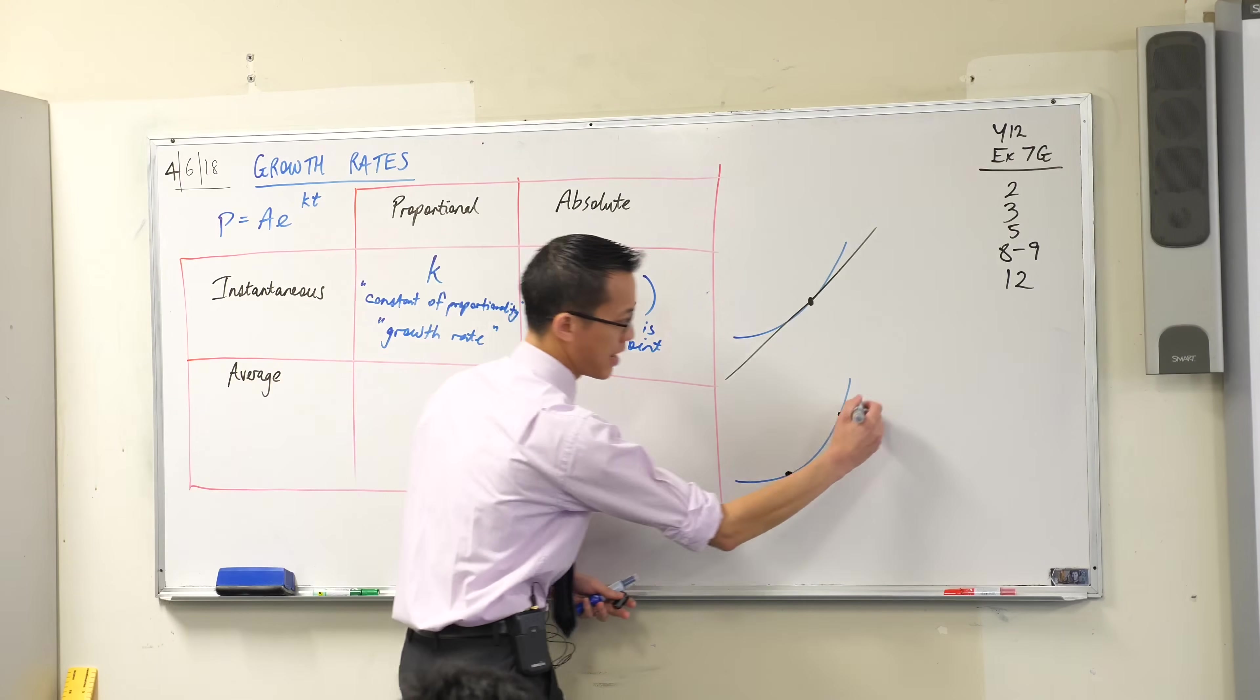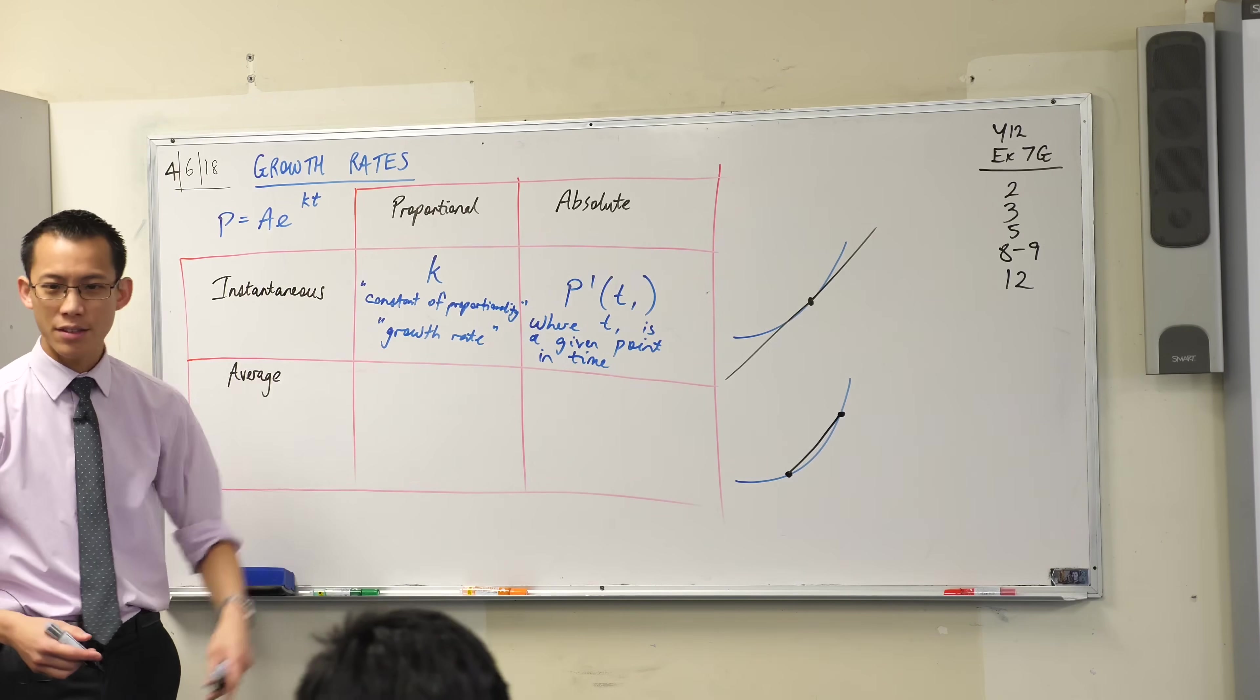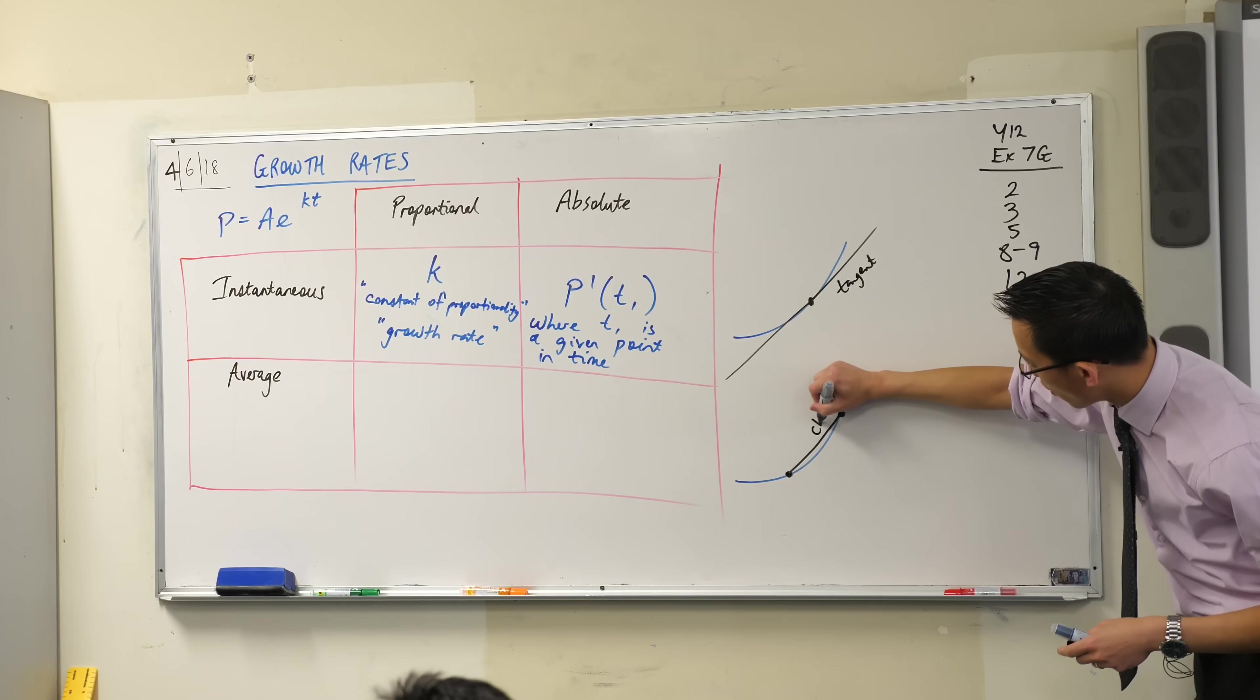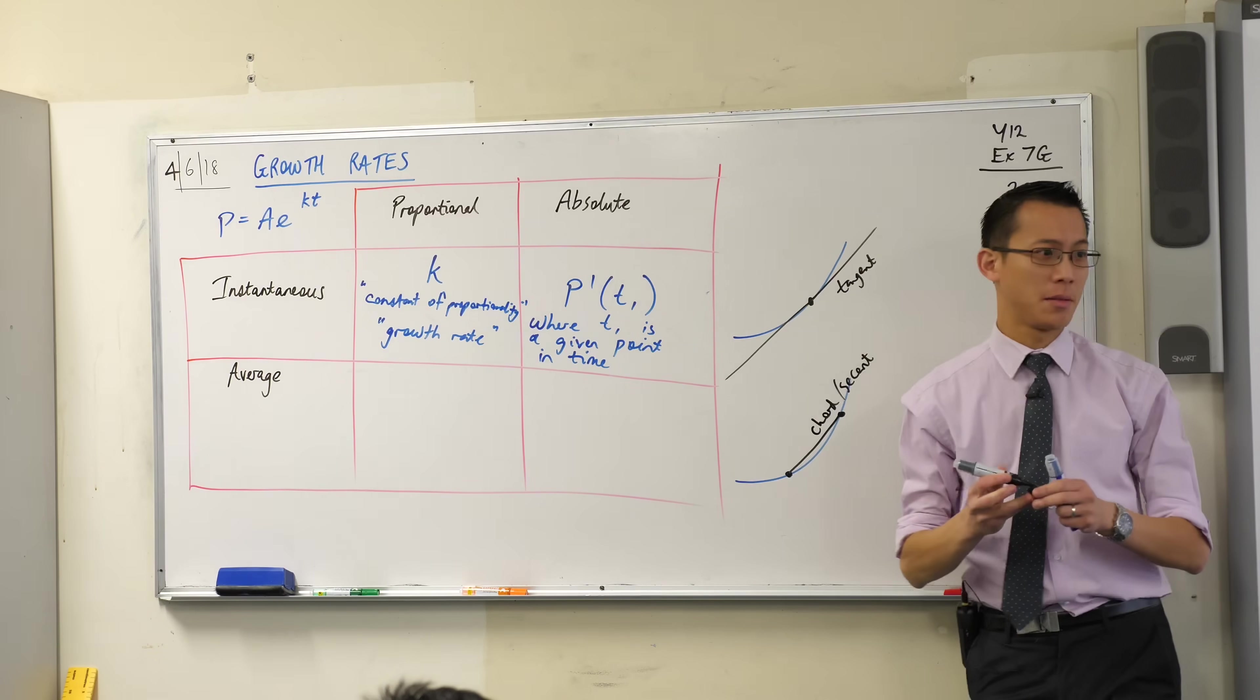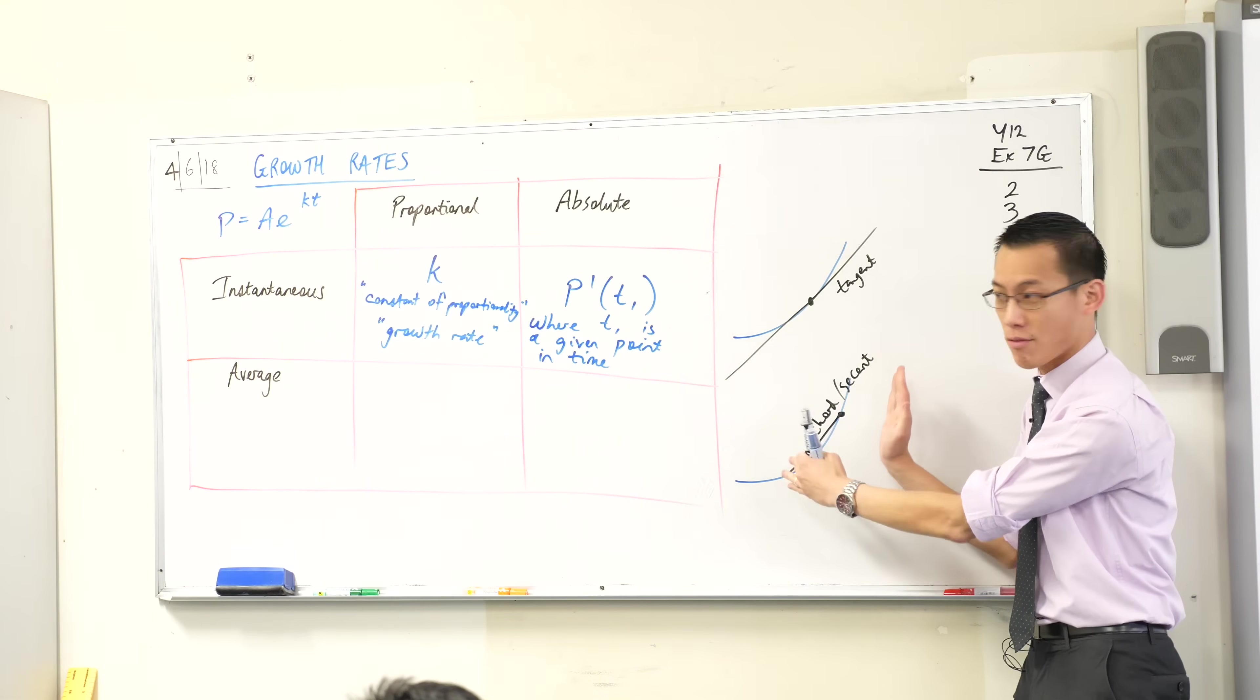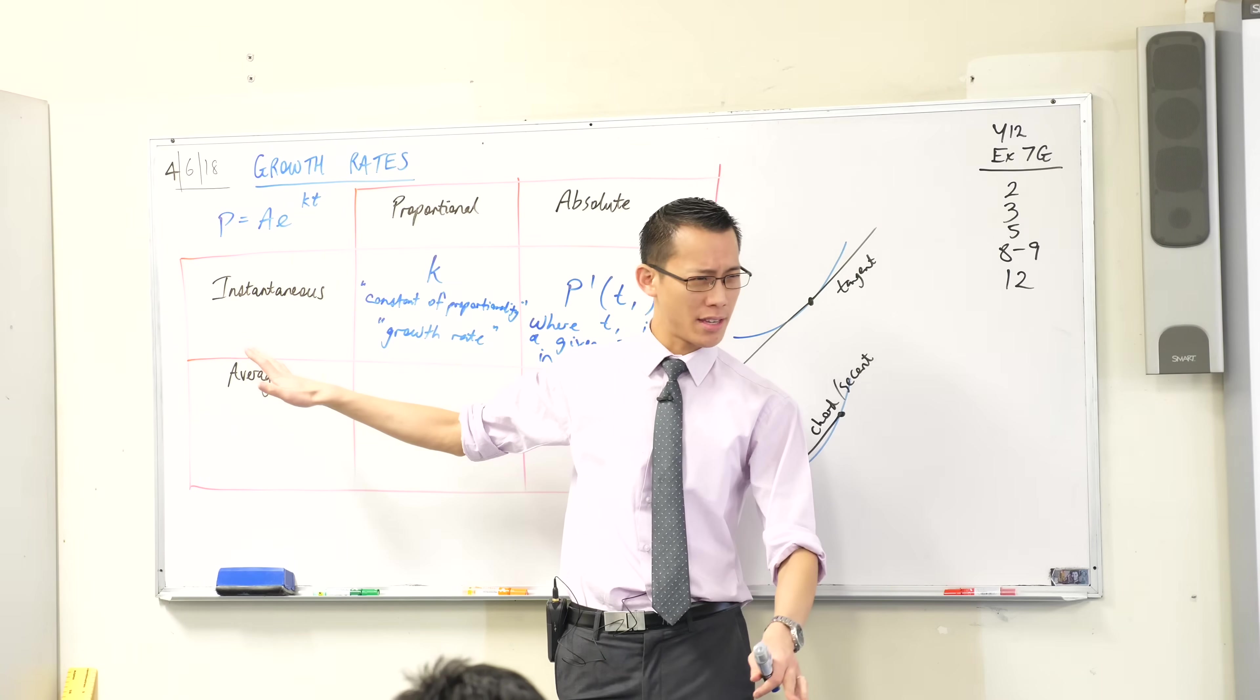And you could see, instead of a tangent you're going to get a secant like that, a chord, I should say, because it ends. And as opposed to our tangent here, this chord or this secant, they're both the same thing in this context, it doesn't represent at a specific point in time, it represents overall a course of time, which is why we call it, rather than instantaneous, we call it the average. Does that make sense?